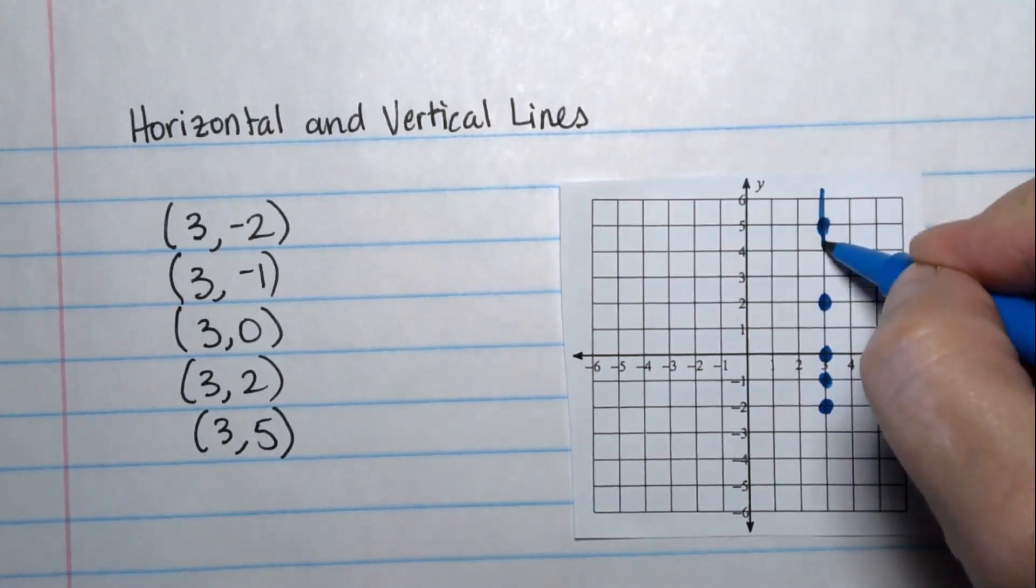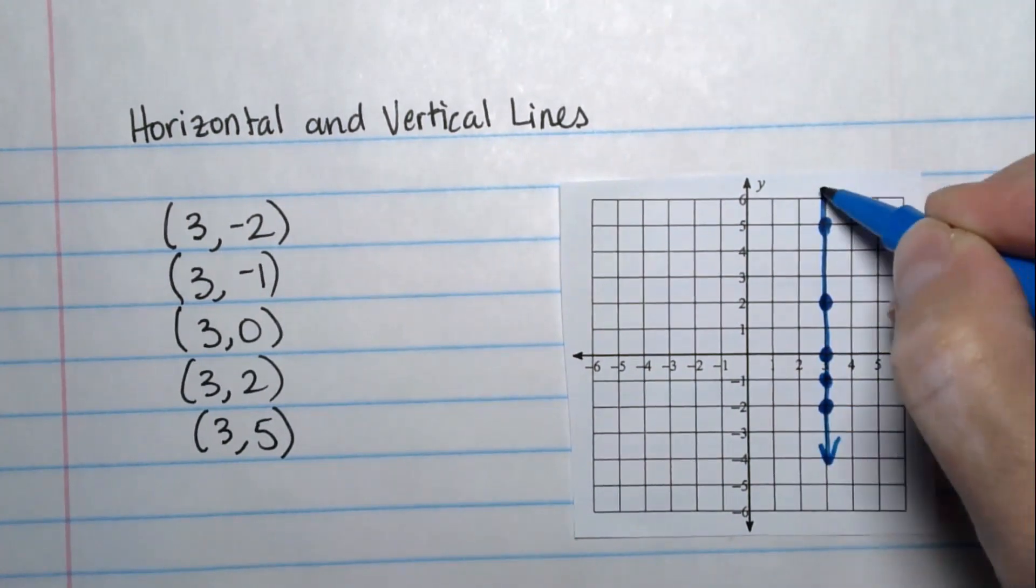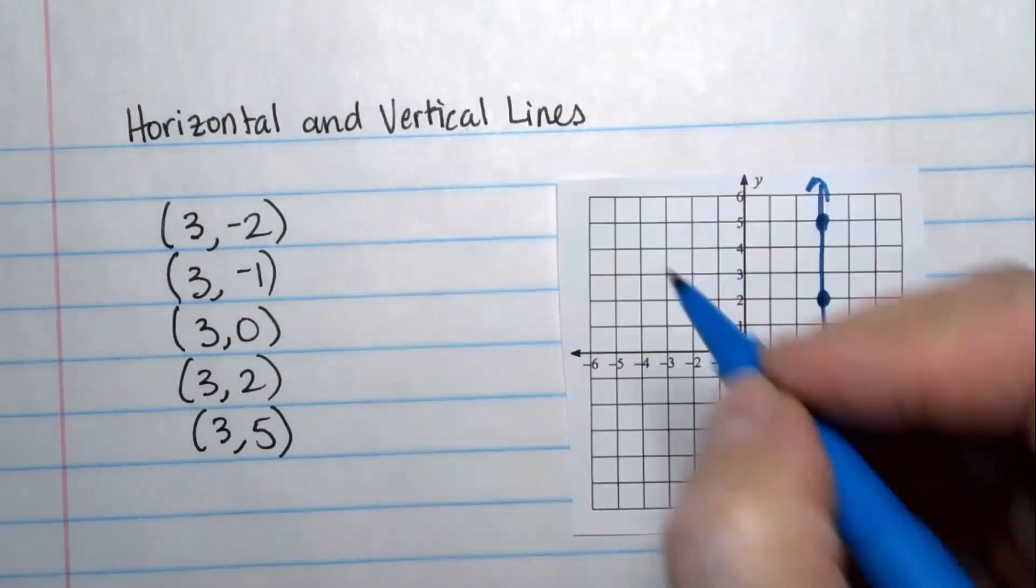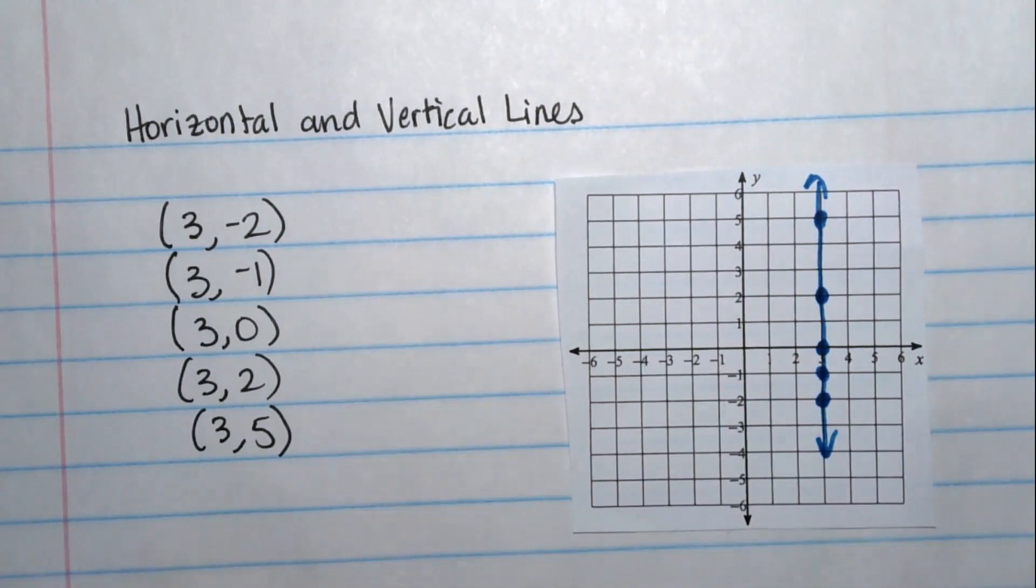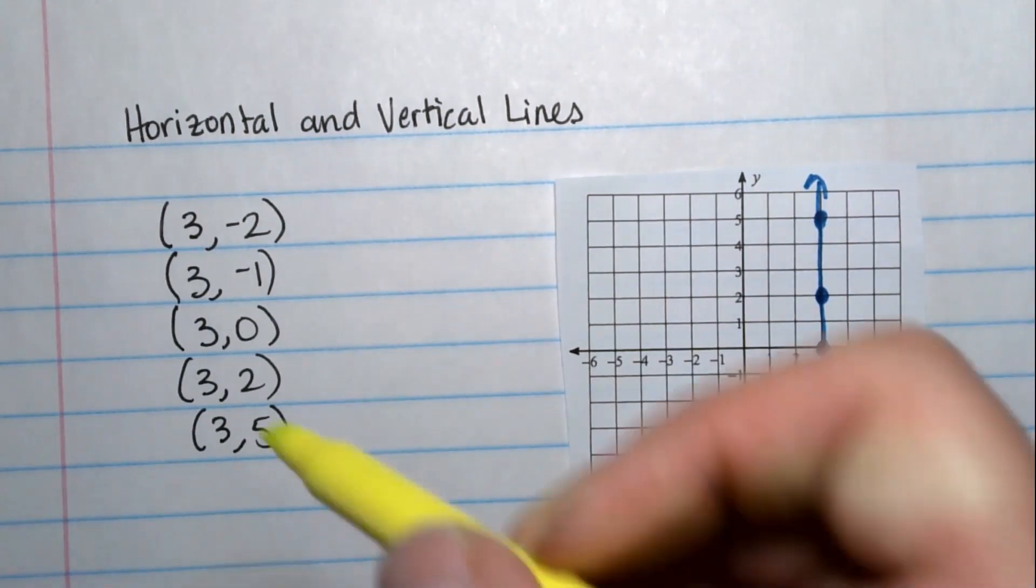Like that, straight up and down. Vertical lines go straight up and down. Well, so I have to write an equation for this. And to me, they always seem a little confusing. I look at these points. Every single x value is 3.